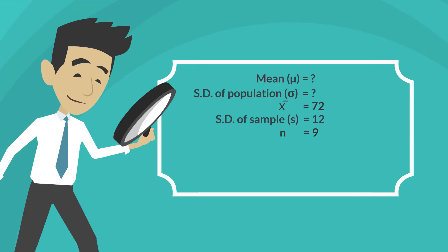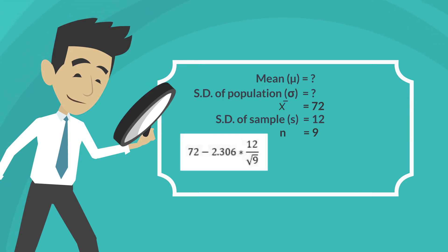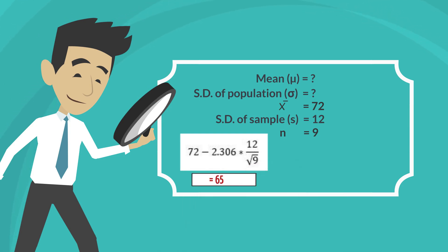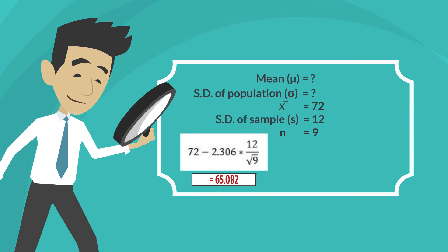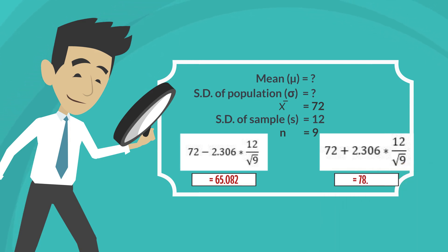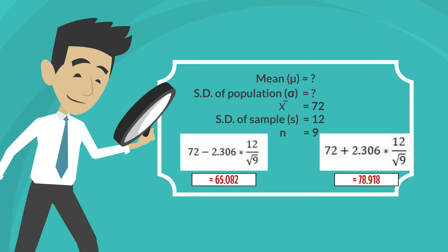The lower bound of the confidence interval is 72 minus 2.306 times 12 divided by 3, which equals 65.082. The upper bound is 72 plus 2.306 times 12 divided by 3, which equals 78.918.